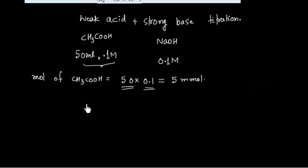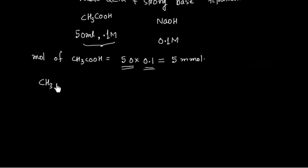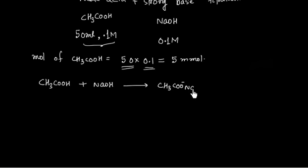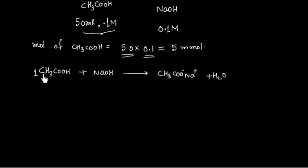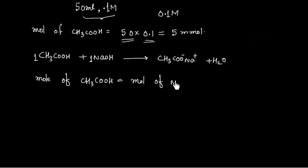Similarly, we can calculate the volume of NaOH required. Looking at the reaction: CH3COOH + NaOH → CH3COO⁻Na⁺ + H2O. We see that 1 mole of acetic acid reacts with 1 mole of NaOH, so the moles of acetic acid equal the moles of NaOH.